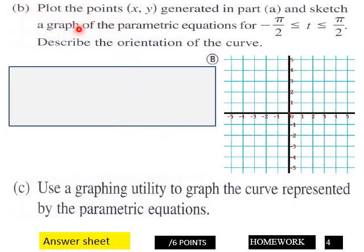Plot the points x and y, so now plot those parametric equations in this grid here. Describe the orientation of the curve here. Then part c, use your graphing calculator to graph the curve represented by the parametric equations here. Six points, page four.